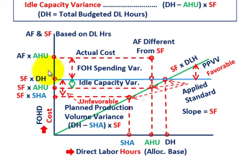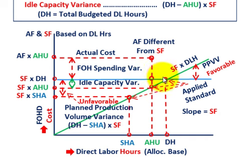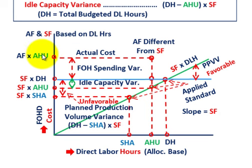Let's start with the fixed overhead spending variance on the graph. That's looking at our actual hours used, moving up to the constant fixed cost where it intersects the blue line, versus the actual fixed overhead rate we have for the period. The actual fixed overhead rate times the actual hours used gives our actual point. The reason this point is above the line is that our actual fixed rate is different from the standard fixed rate — the standard fixed rate falls on that green line, but our actual fixed rate for the period was above it.